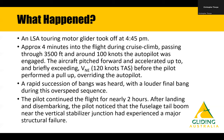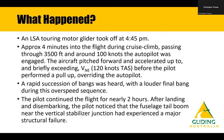After landing at the destination and getting out, the pilot noticed that the fuselage tail boom, immediately at the leading edge of the fin-to-fuselage junction, had experienced a major structural failure. Some 70% of the structure had been cracked. You can see a significant tension failure on the photo on the left — that's the starboard side of the fin — and some compression-type failures on the right-hand side photo, which is the port side of the fin.